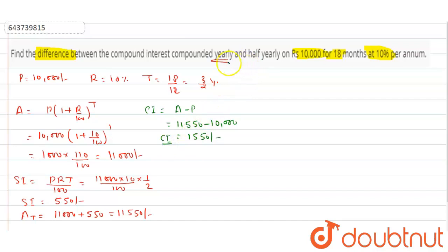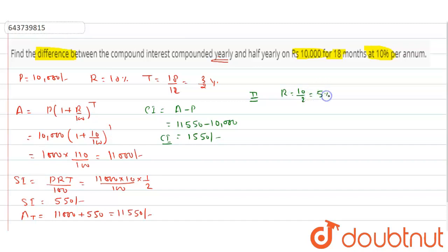In the second case, we calculate the amount when compounded half-yearly. The rate of interest becomes 10 upon 2, equal to 5 percent, and the time becomes 3/2 into 2, equal to 3 half-year periods.